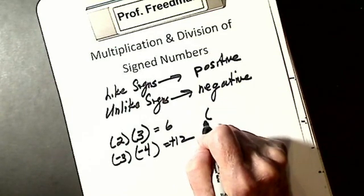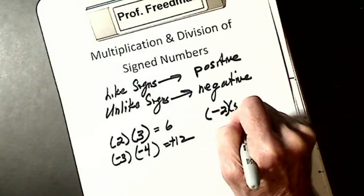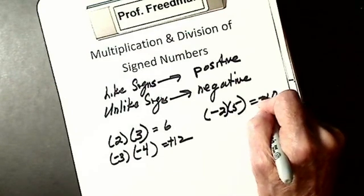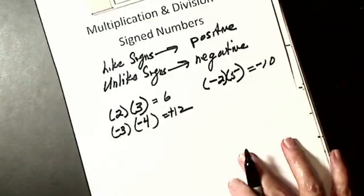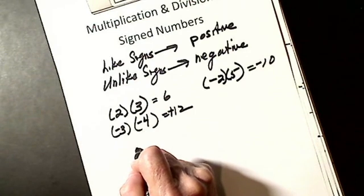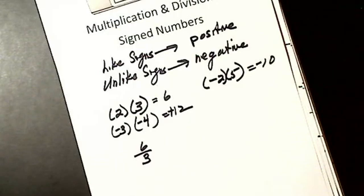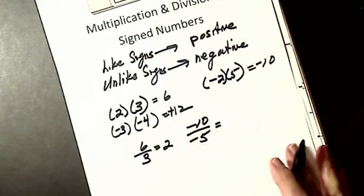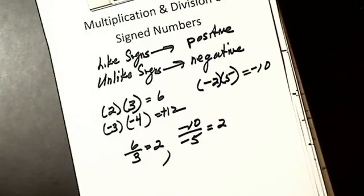If I have unlike signs, negative 2 times 5, I have unlike signs, I get a 10, it's going to be negative. The same thing for division. Let's say I have 6 divided by 3. I have like signs, I get a 2. So let's say I have negative 10 divided by negative 5. Like signs are plus, I get positive 2.